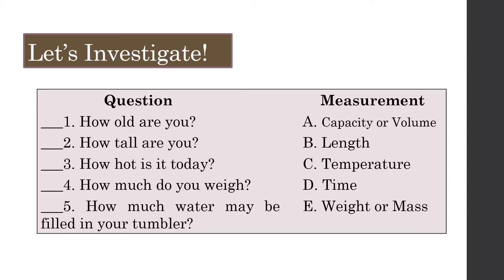Let's start with number 1. When we are asking 'How old are you?' we are referring to a measure of time. The answer is D, or time. Number 2: 'How tall are you?' refers to measures of length, which is letter B. Number 3: 'How hot is it today?' refers to temperature. Number 4: 'How much do you weigh?' refers to measures of weight or mass. Number 5: 'How much water may be filled in your tumbler?' is answered by finding the capacity or volume of the container, so the answer is letter A.